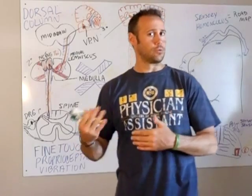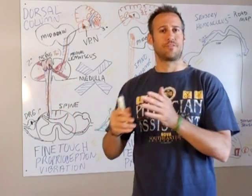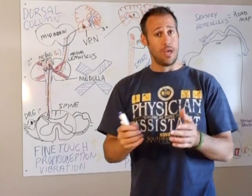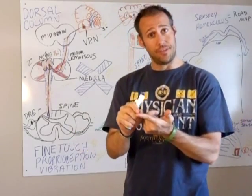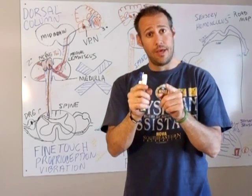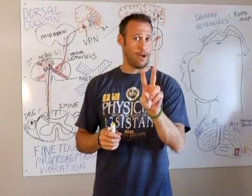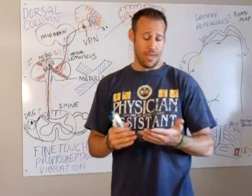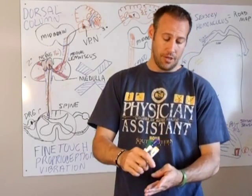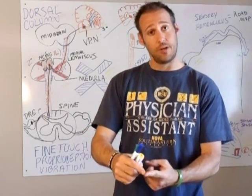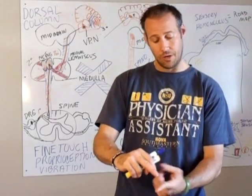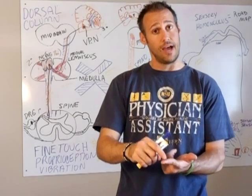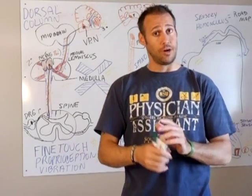Clinically, this has relevance. For the dorsal column, you would test for two-point discrimination. Say somebody came in with a laceration to their finger — there are tools that measure the distance between two points. Often people use a paper clip because that's about five millimeters, which is the borderline for having a neurological deficit. You would test two-point discrimination to ensure that the digital nerve traveling along the lateral or medial aspect of the finger is intact or cut.